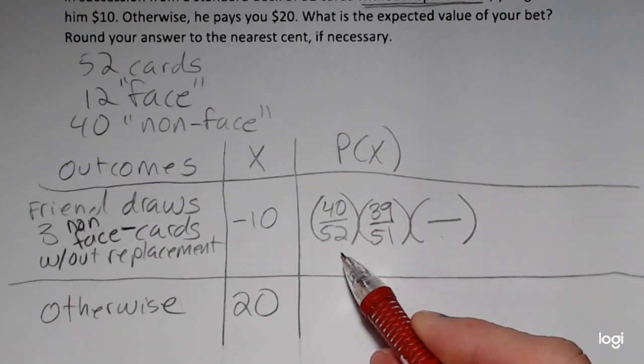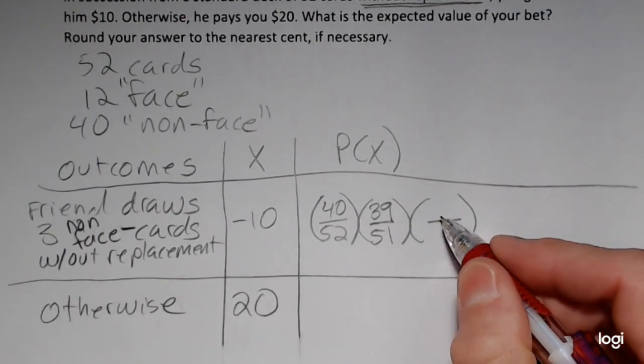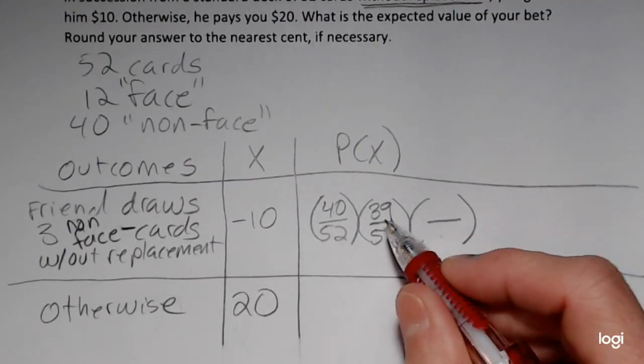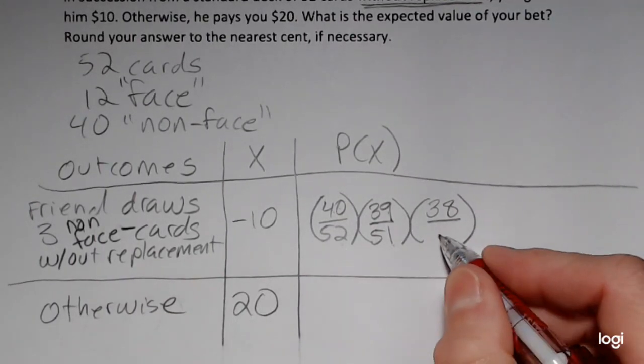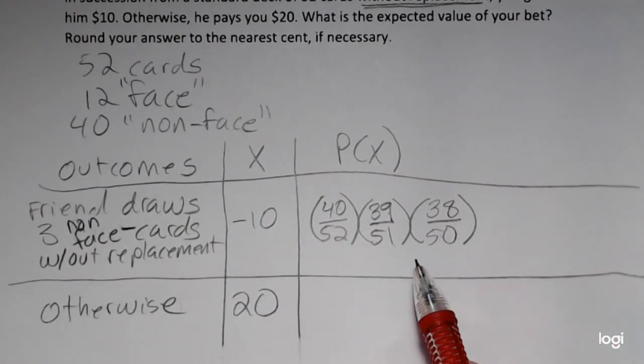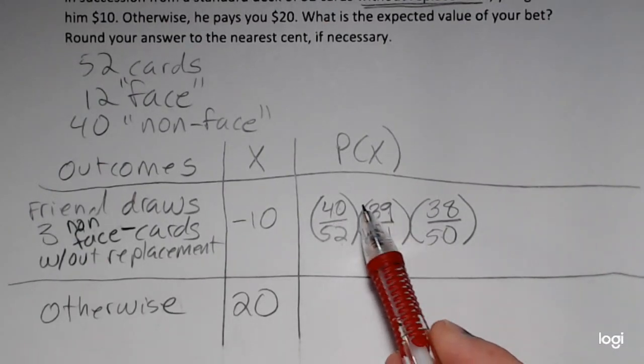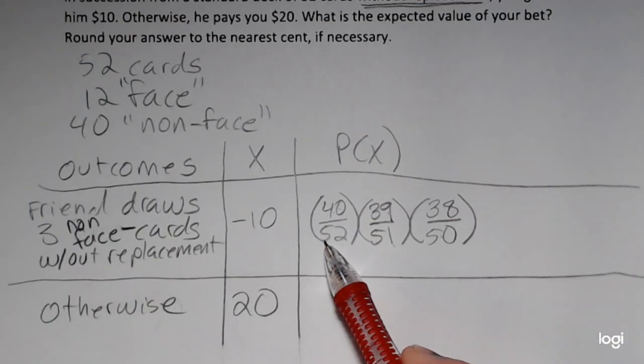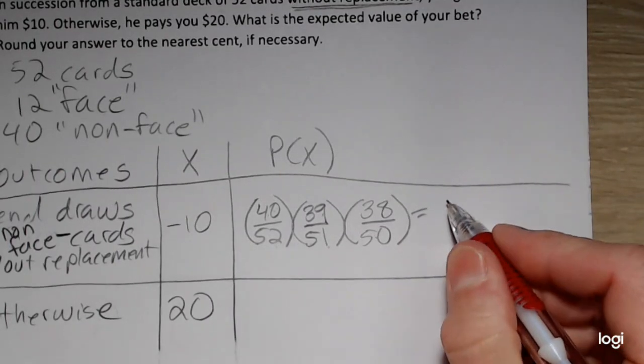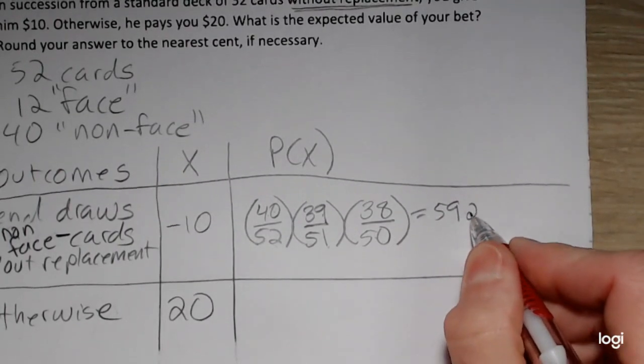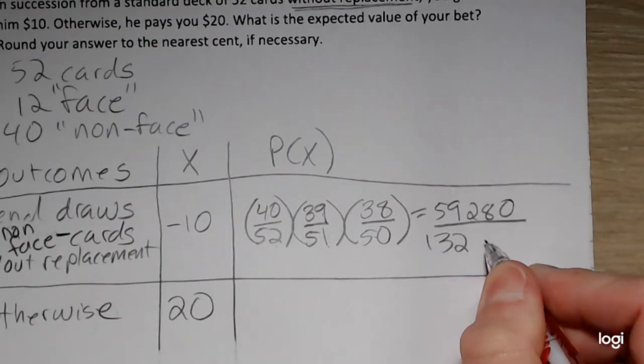Same reasoning for this third factor. We have two non-face cards. We have 38 left. We've drawn two cards without replacement. We have 50 left. Now, you might notice, if you remember permutations, this is going to be 40 permute 3 divided by 52 permute 3. Or you could just go ahead and multiply straight across. So when you do that, this numerator is 59,280, and the denominator is 132,600.